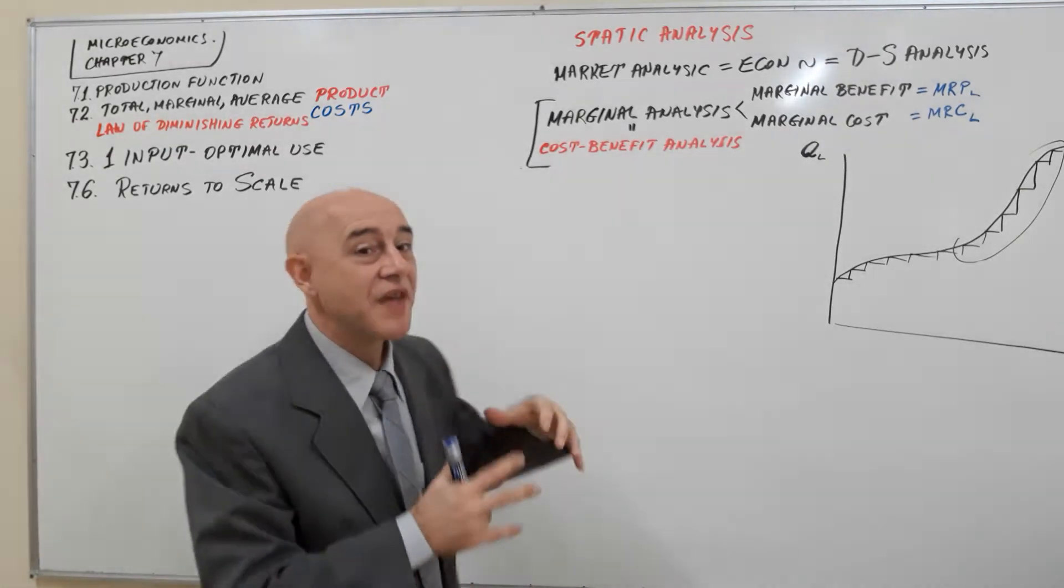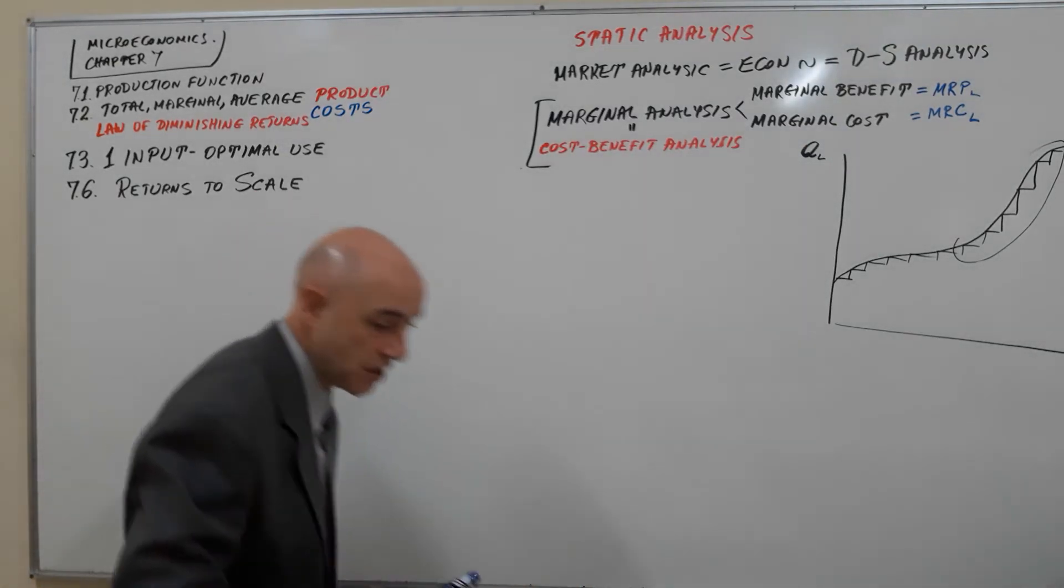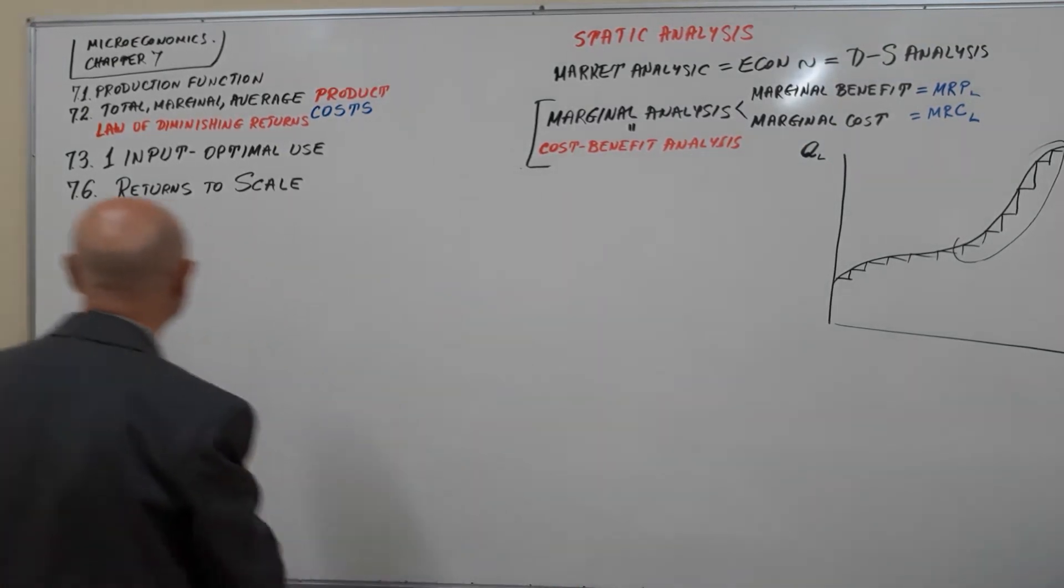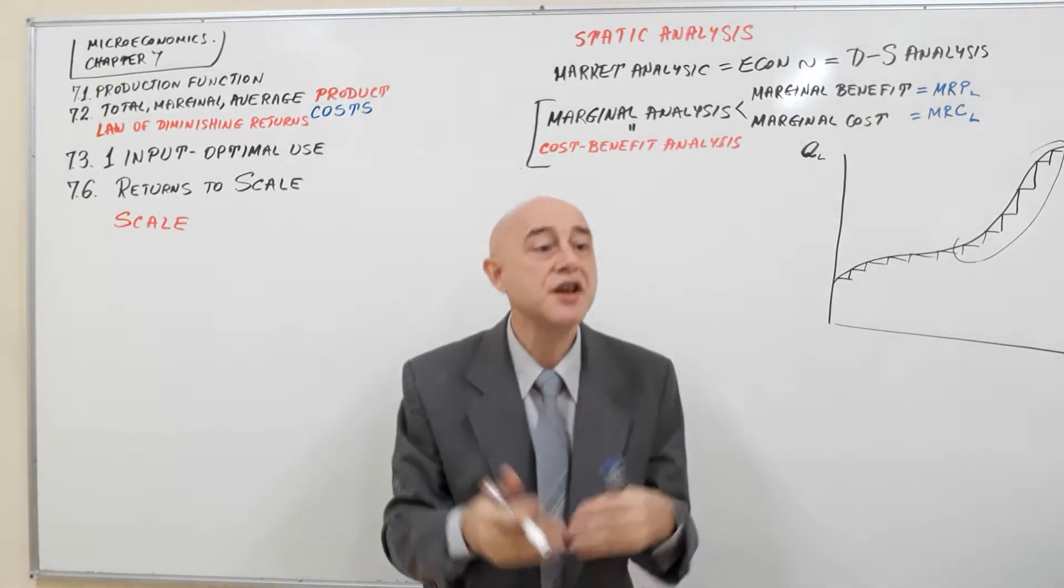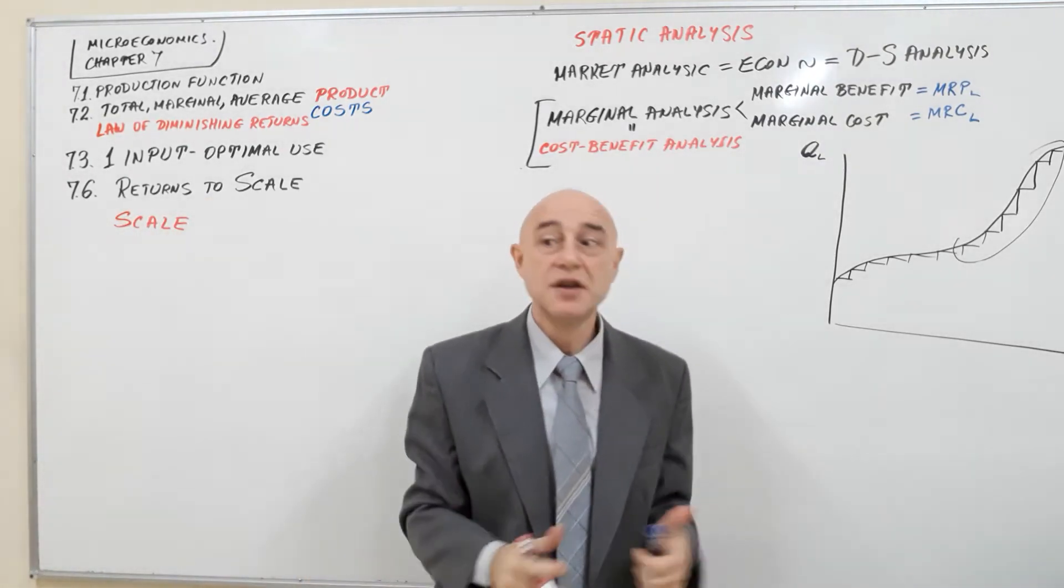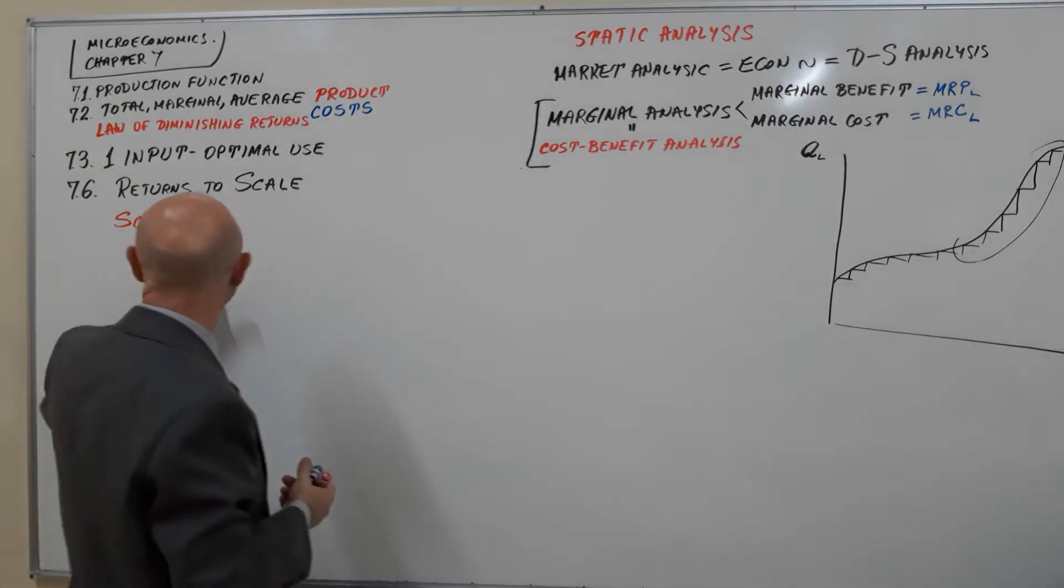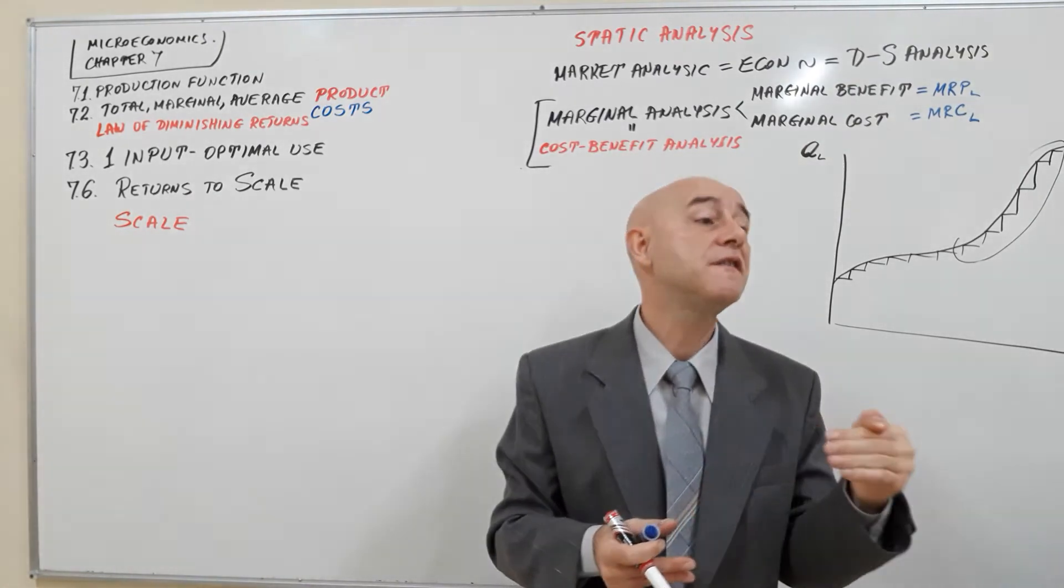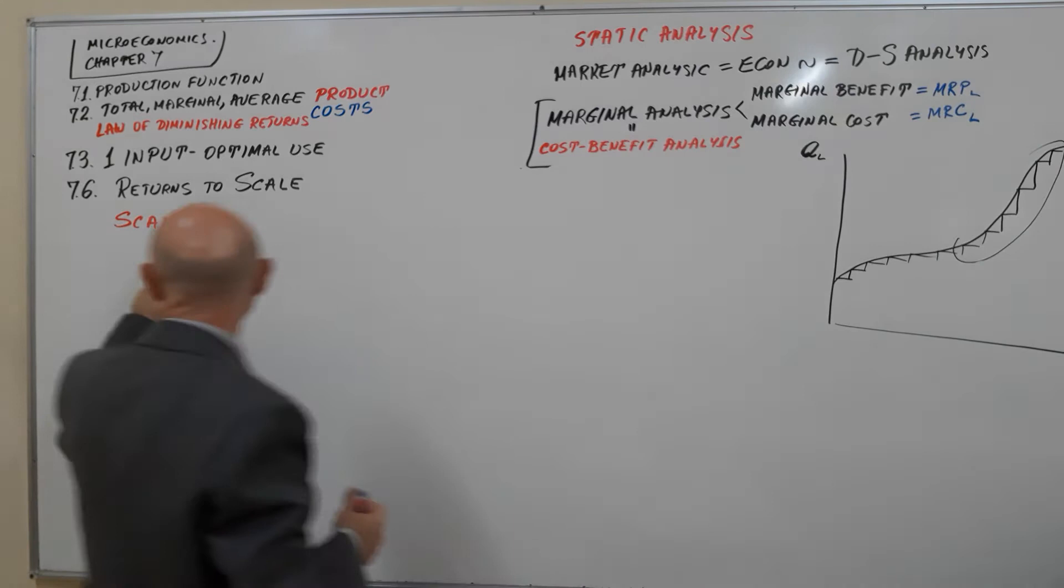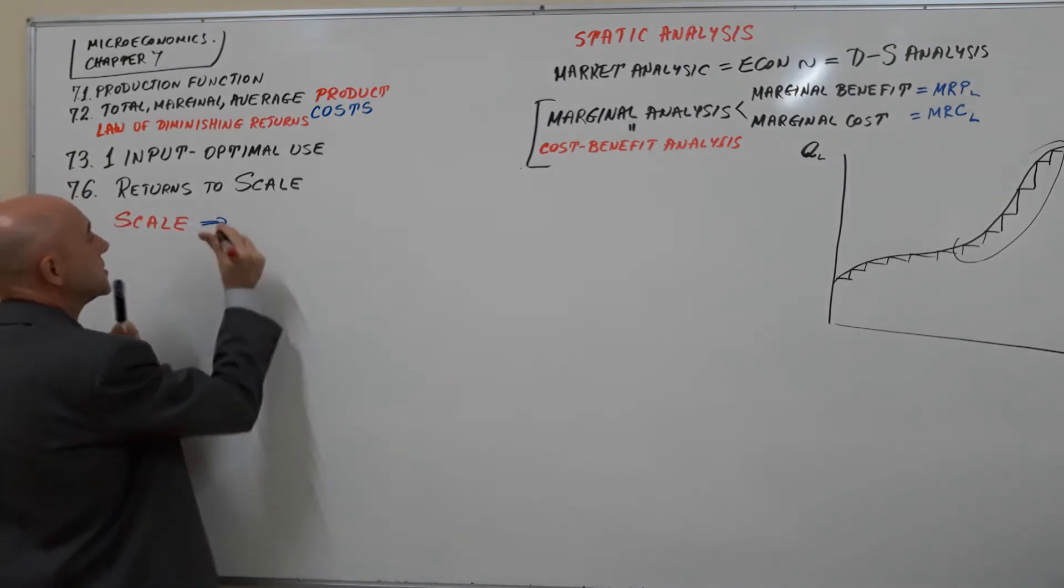So now we need to determine scale. Scale is the quantity of inputs used, so the quantity of capital and the quantity of labor. As you increase the scale, probably the output will go up, and the output will go faster. And this is called economies of scale.